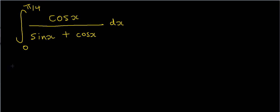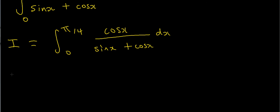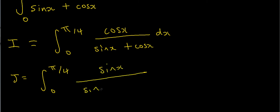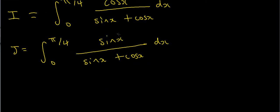Here's what we do. I'm going to let capital I be the integral from 0 to pi over 4 of cosine x divided by sine x plus cosine x dx. Now I'm going to set up a very similar integral: let J be the integral from 0 to pi over 4 of sine x divided by sine x plus cosine x dx. So I and J look very similar — J is exactly the same as I except with sine in the numerator instead of cosine.